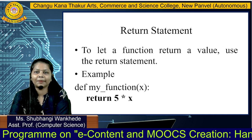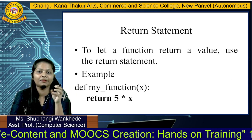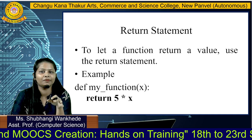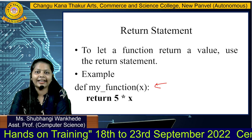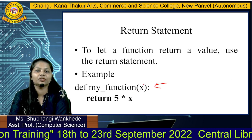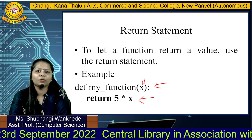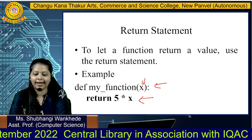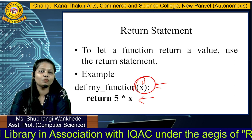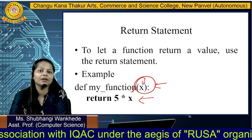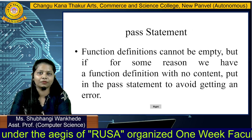The return statement exits from the function. It says that this is the last statement and we can exit from the function body. Here we have seen an example — def my_function with x as a parameter. We are returning 5 times x. So, 5 * x: x is any value which will be passed when my_function is called. This function is going to return 5 times x.